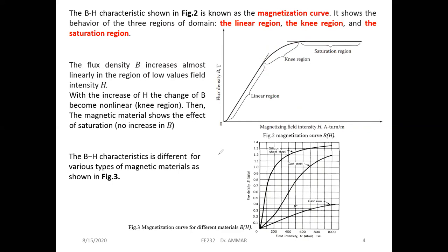H can be increased by the current. From Ampere's law, H equals N × I over l, so it can be increased by the number of turns or by the current. At the beginning, in the linear region, whatever I increase H, B gets increased proportionally.